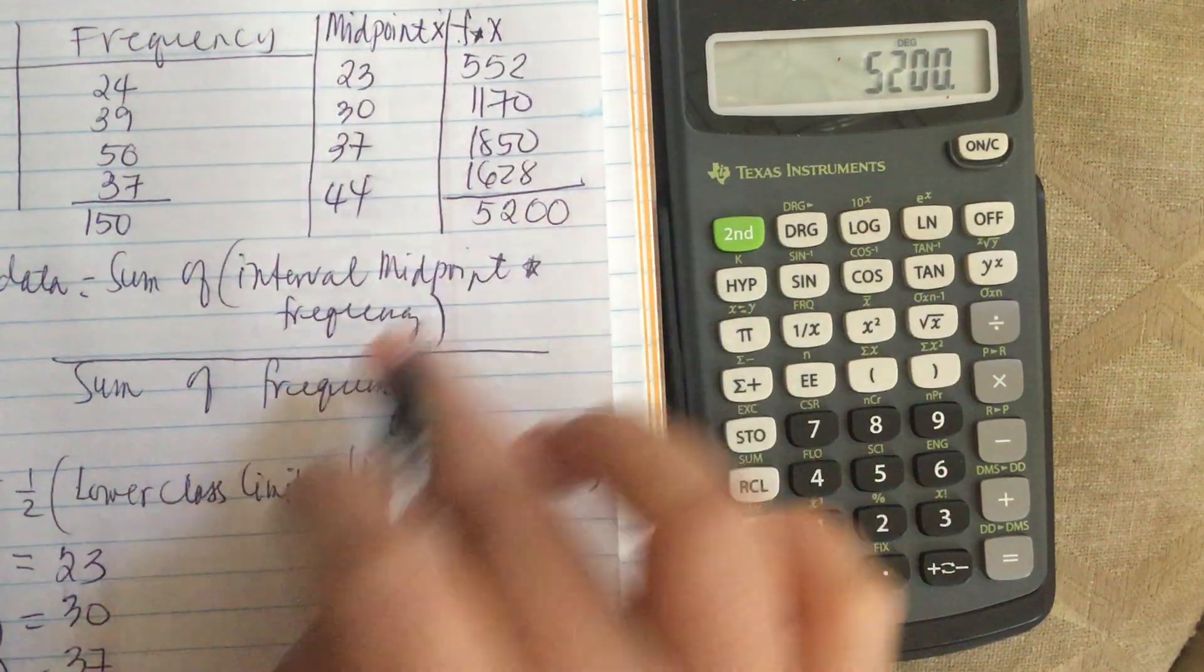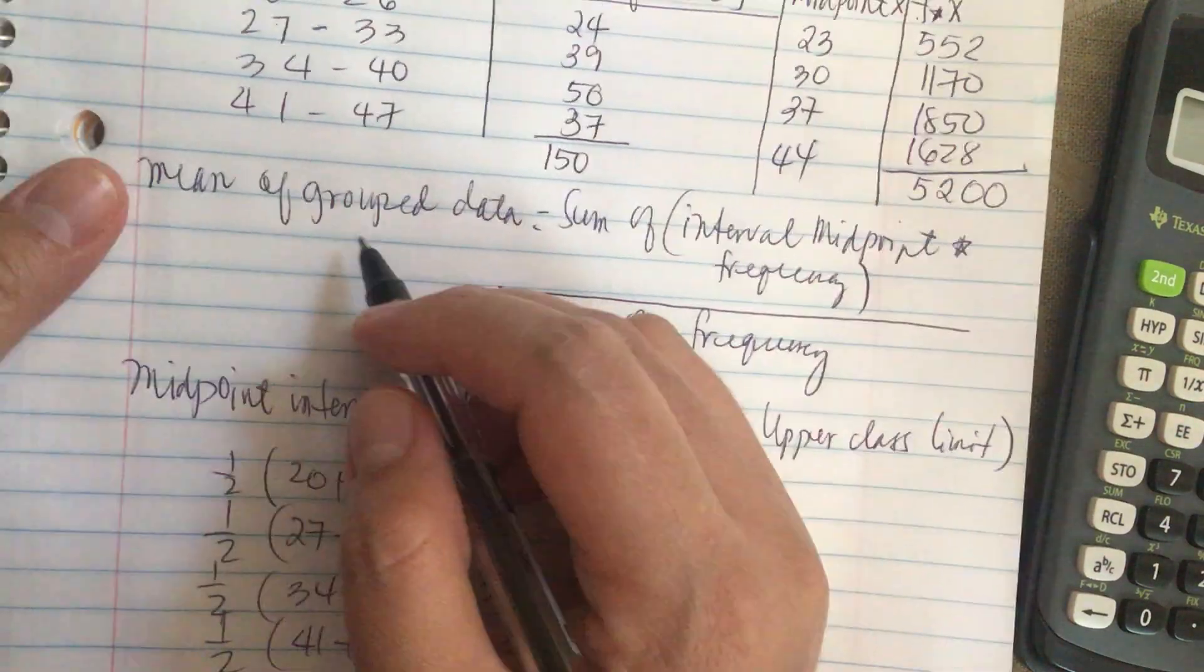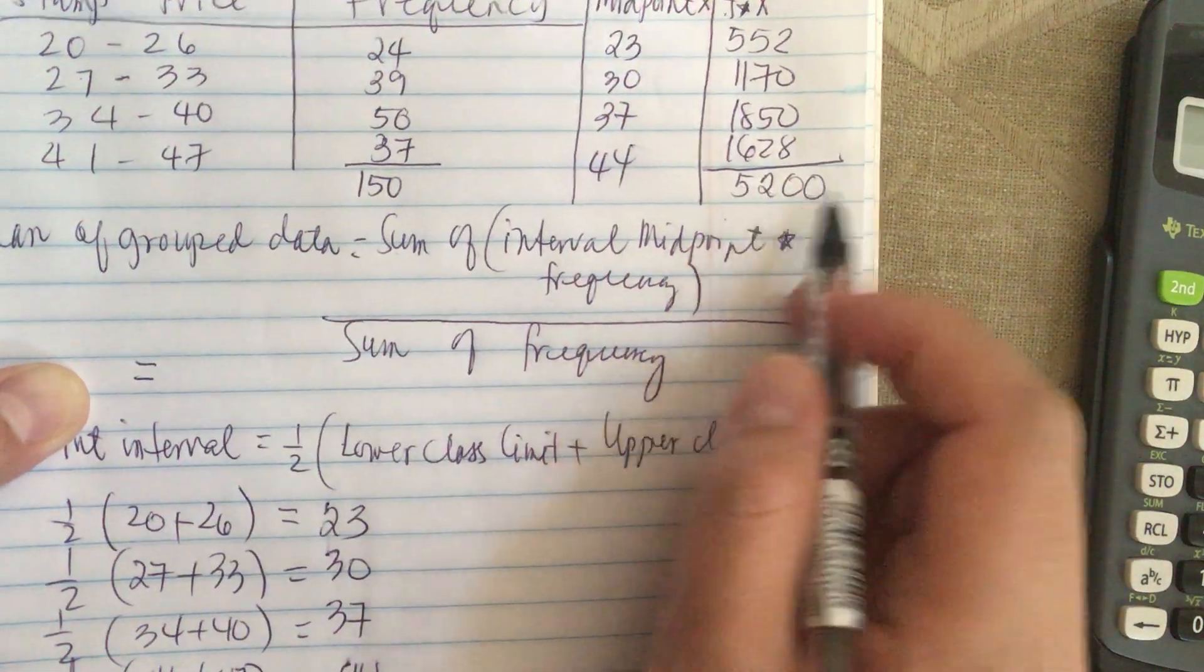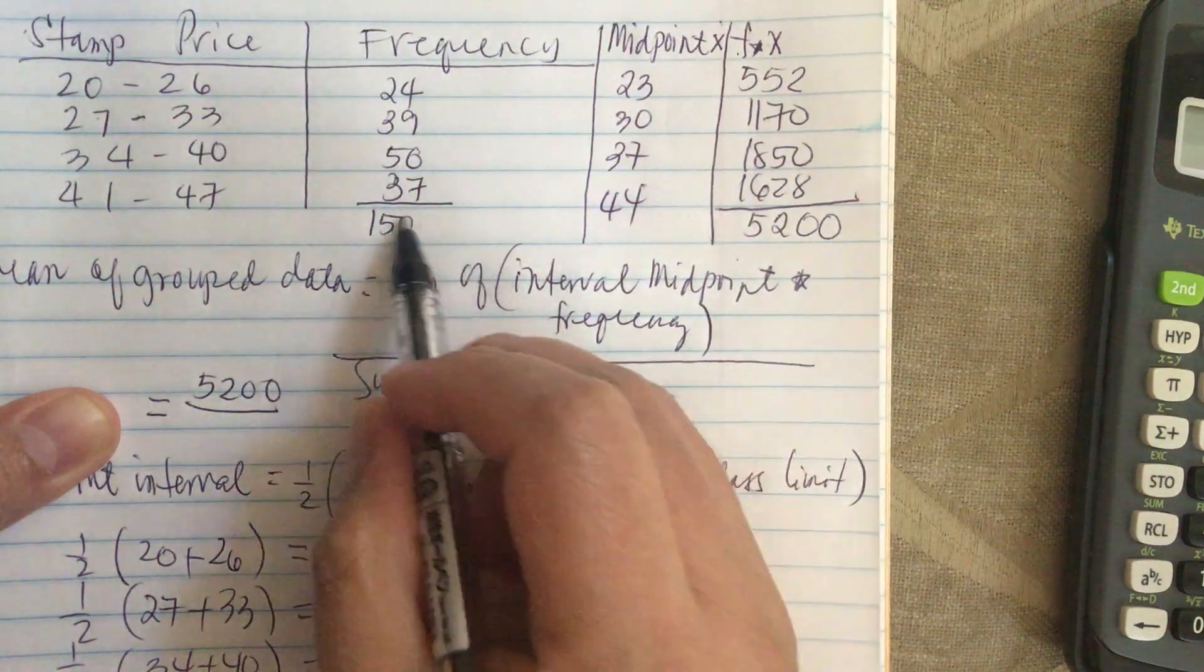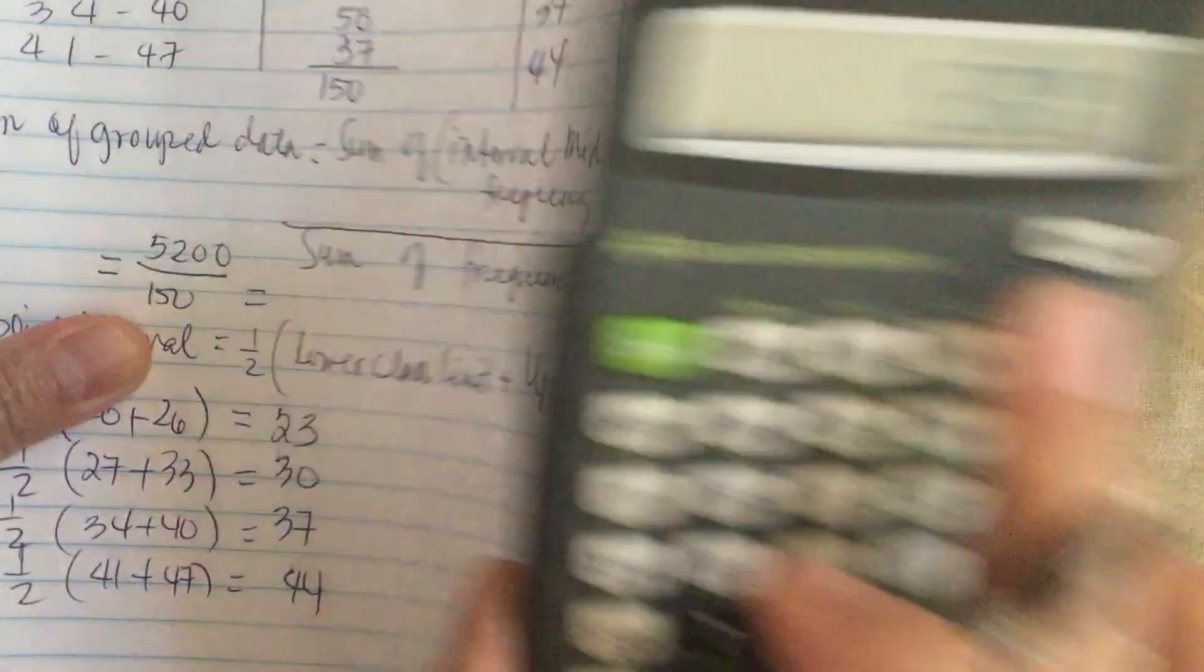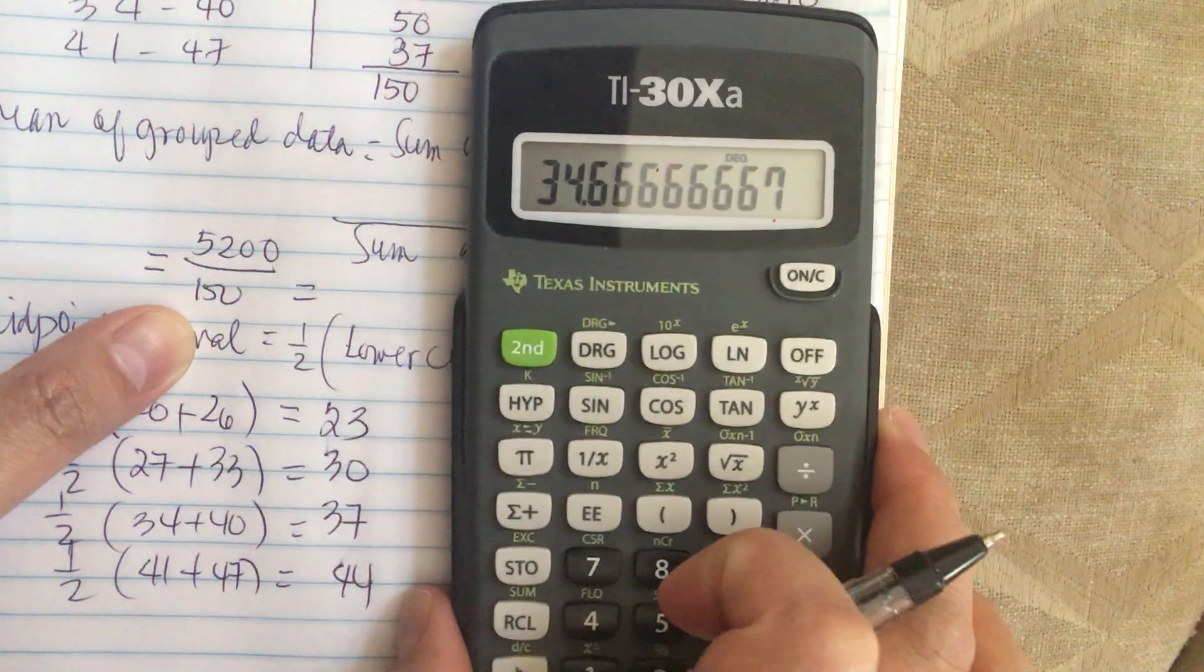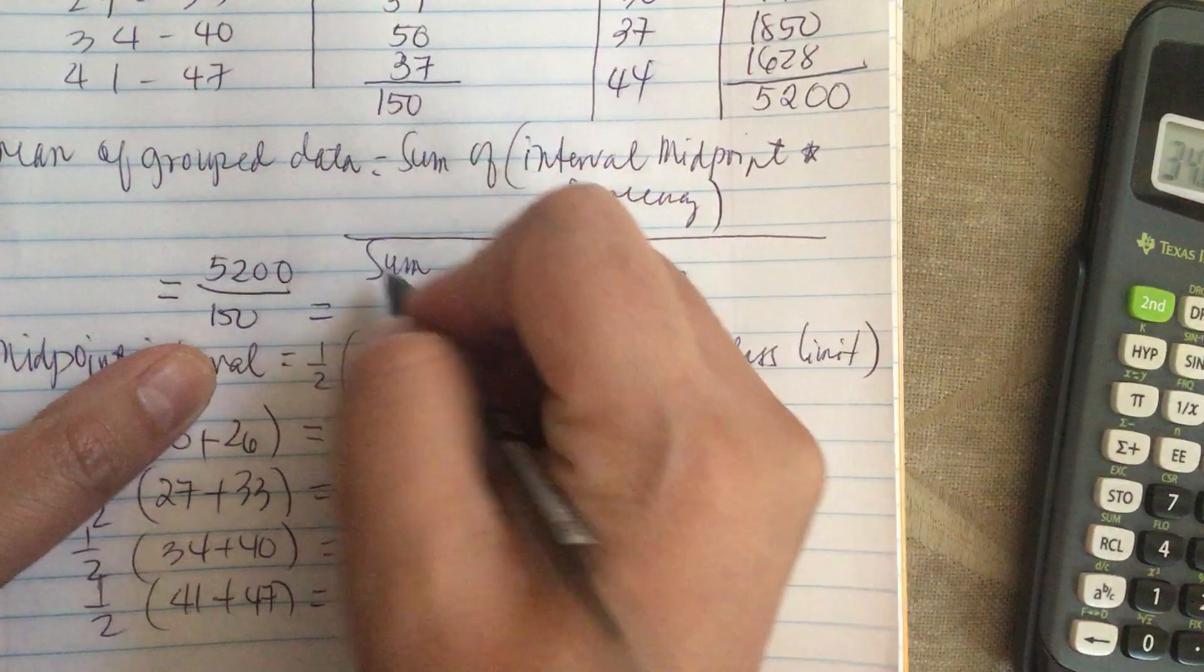So now this number goes on the top. So this is the formula. The mean is equal to the sum of interval midpoint, which is 5200, over the sum of the frequency, which is 150. So we divide this by 150, and it's equal to 34.66 or 34.7.